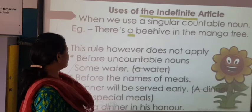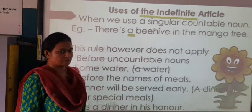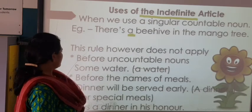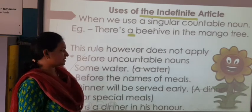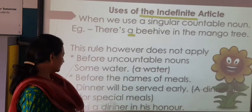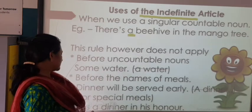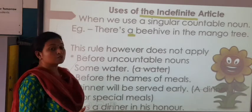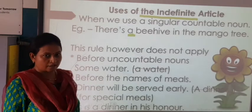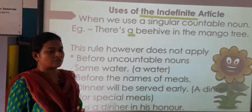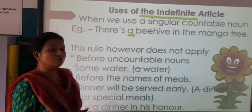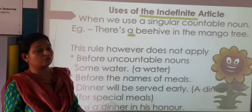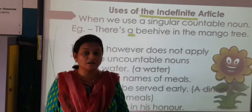This rule does not apply before uncountable nouns. Before the names of meals — 'Dinner will be served early' — we will never say 'a dinner' for general use. But 'This is a dinner in his honor' — here 'a dinner' is used because it is for a special occasion. Otherwise you will never use 'a dinner'. The same way, you will never say 'a water'. You say 'give me a glass of water'.